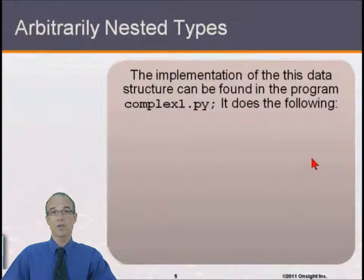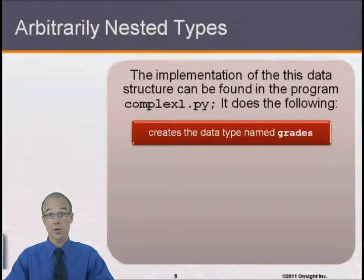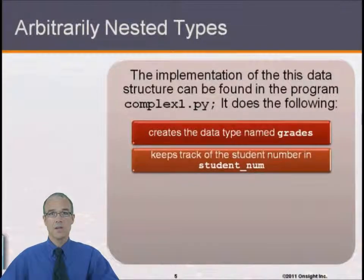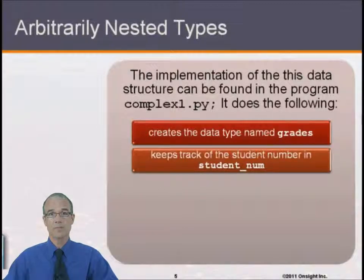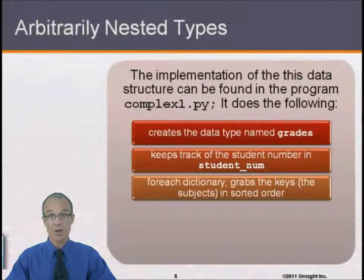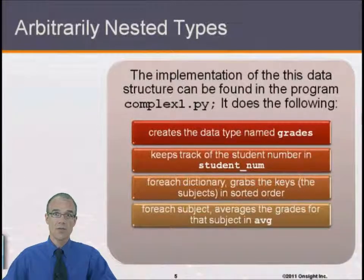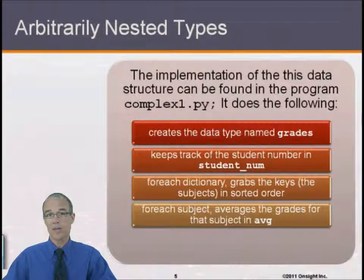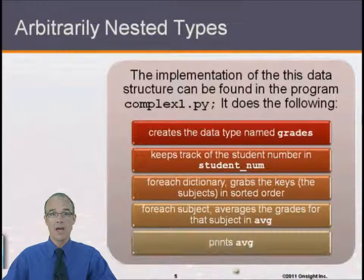This structure is implemented in complex1.py. The program will first create the data type called grades — grades is the list. Then it will keep track of the student number in the variable studentNum. For each dictionary, it will grab the keys (the subjects) in sorted order, and for each subject, average the grades for that subject in the variable avg, then print the average of all the grades.